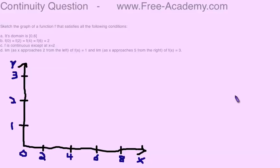You need to submit a graph of a potential function that would fit the following four conditions. Its domain is from 0 to 6, f(0) = f(2) = f(4) = f(6) = 2. The function is continuous everywhere except for 2, and the limit as x approaches 2 from the left equals 1, and the limit approaching from the right equals 3. As x approaches 5 from the right equals 3. Okay, sorry, a little mispronunciation there.